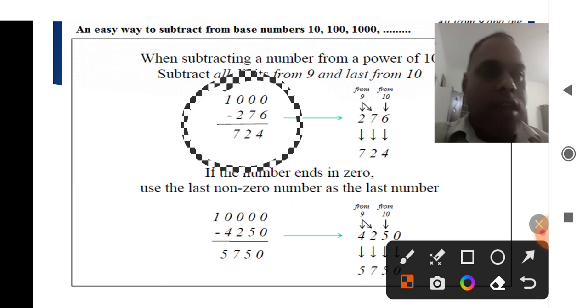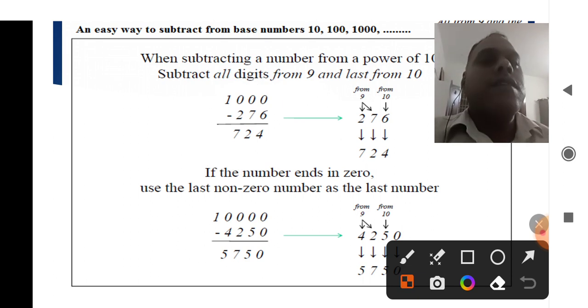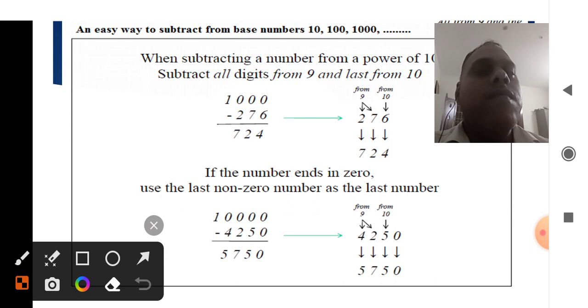We can easily solve another example: 10,000 minus 4,250. First, we write the number 4,250. The last number is zero; when the last number is zero, we carry over the zero. The next to last number is five.